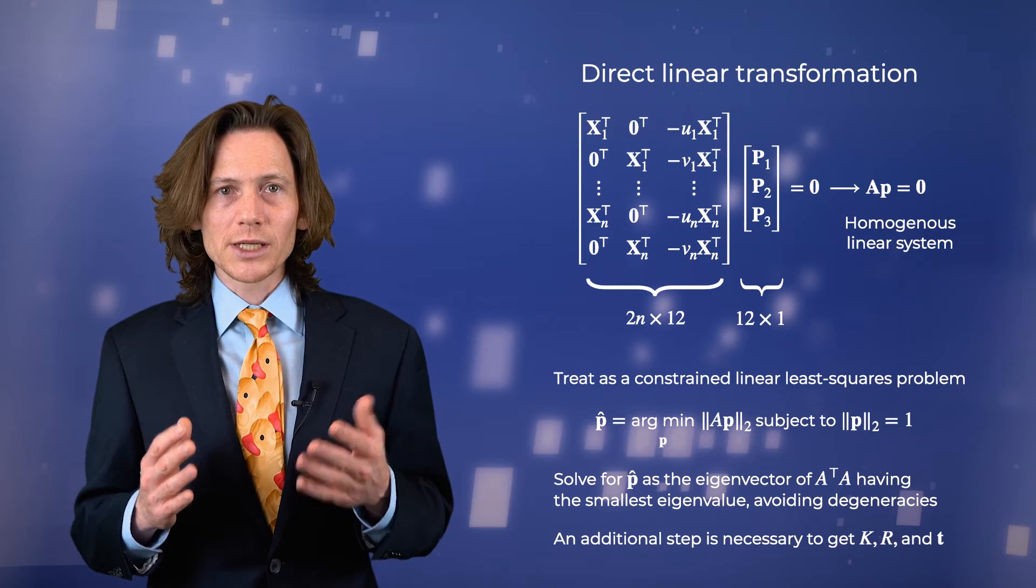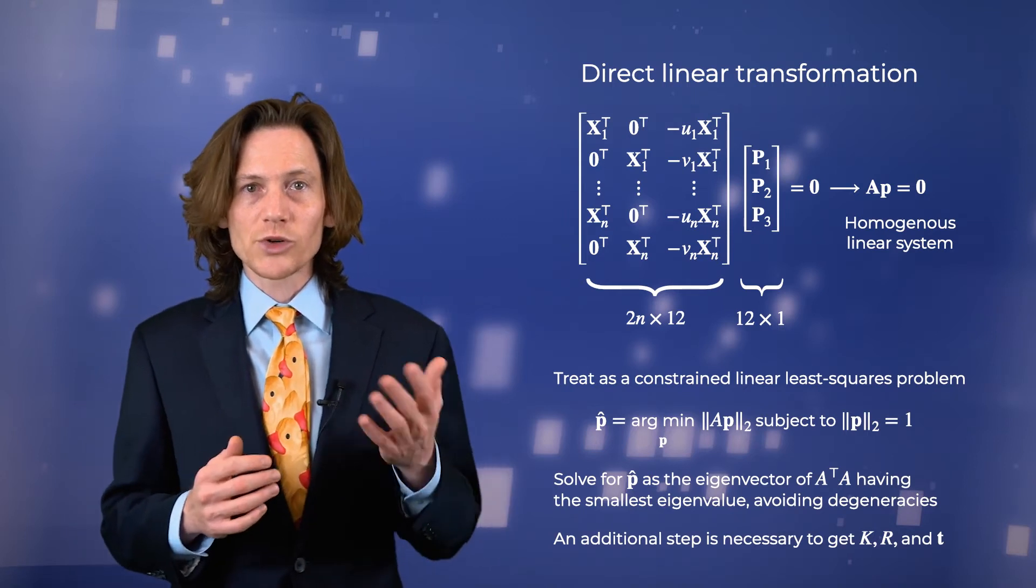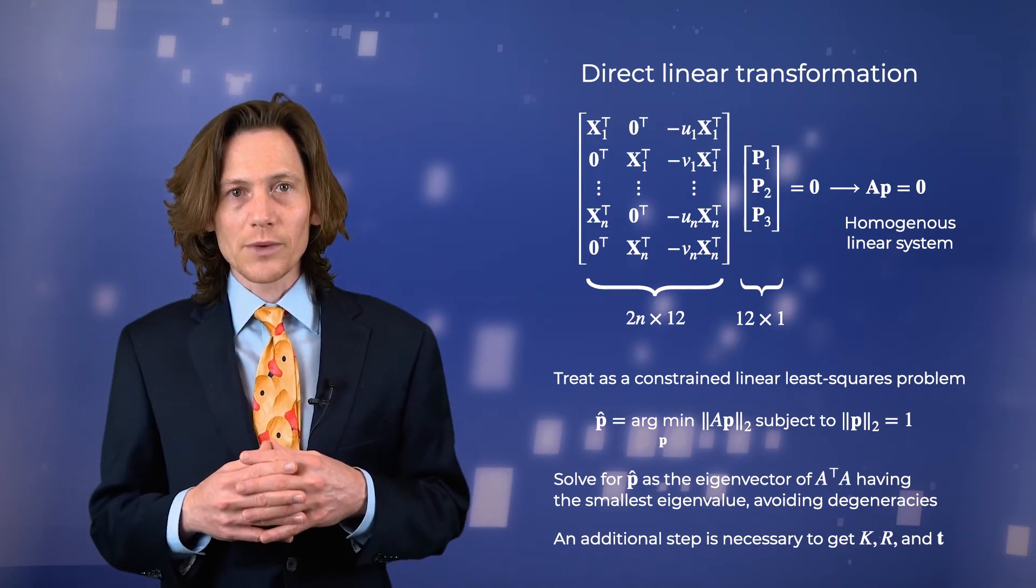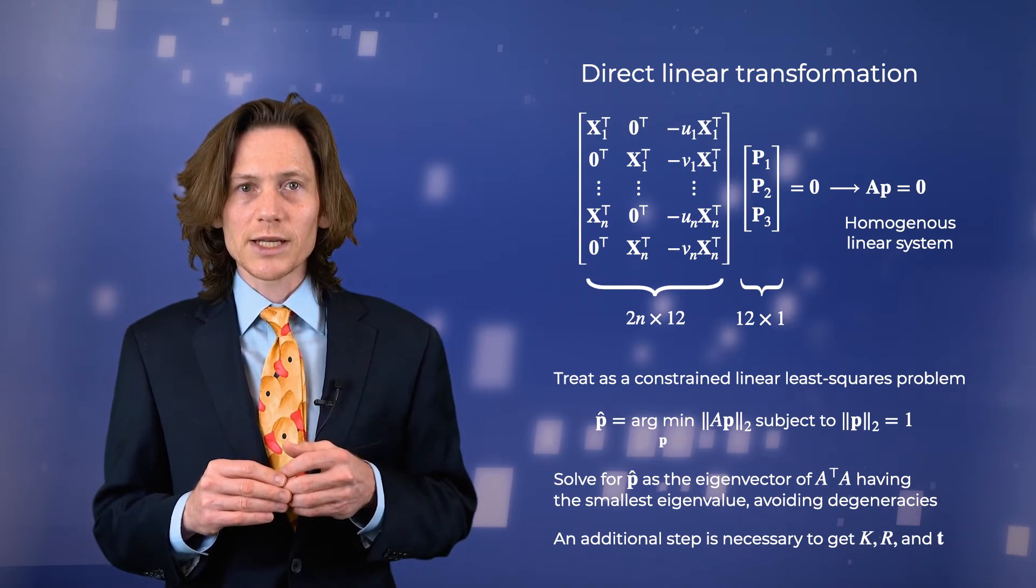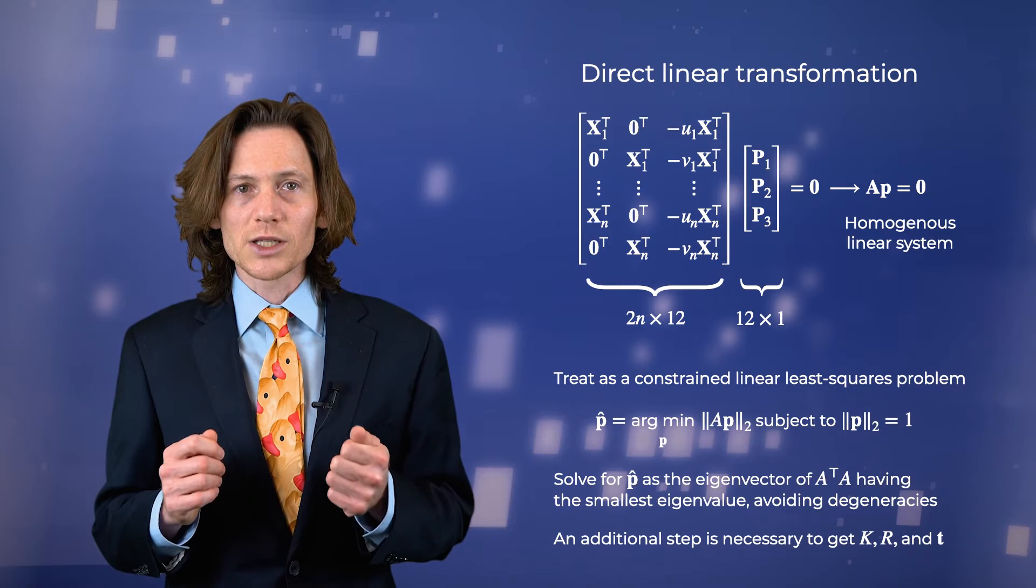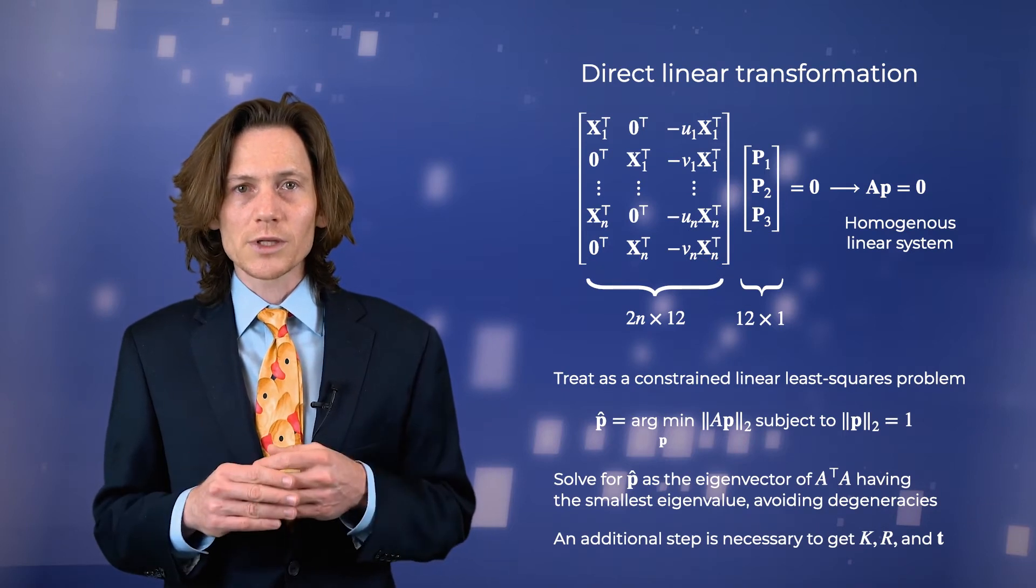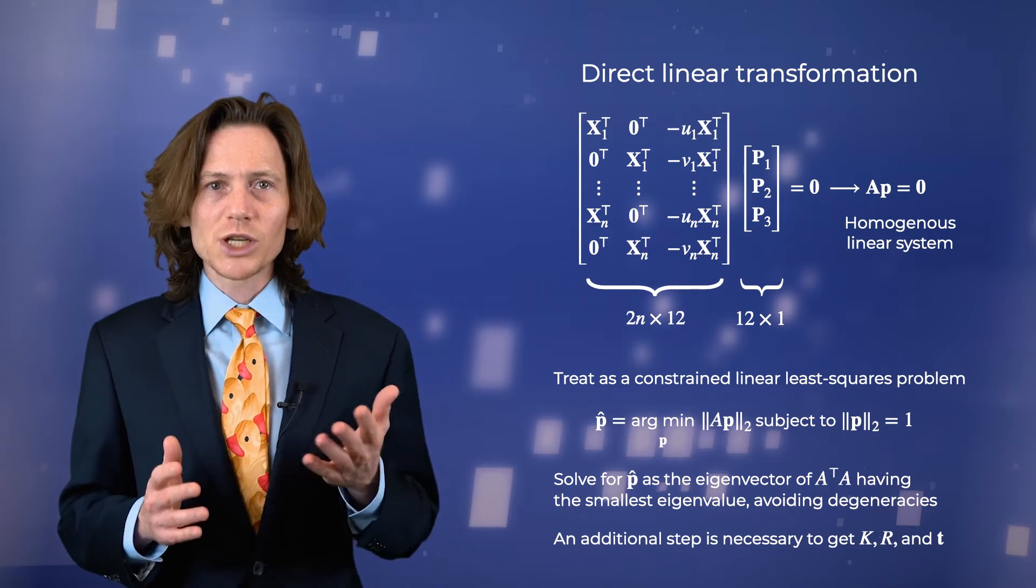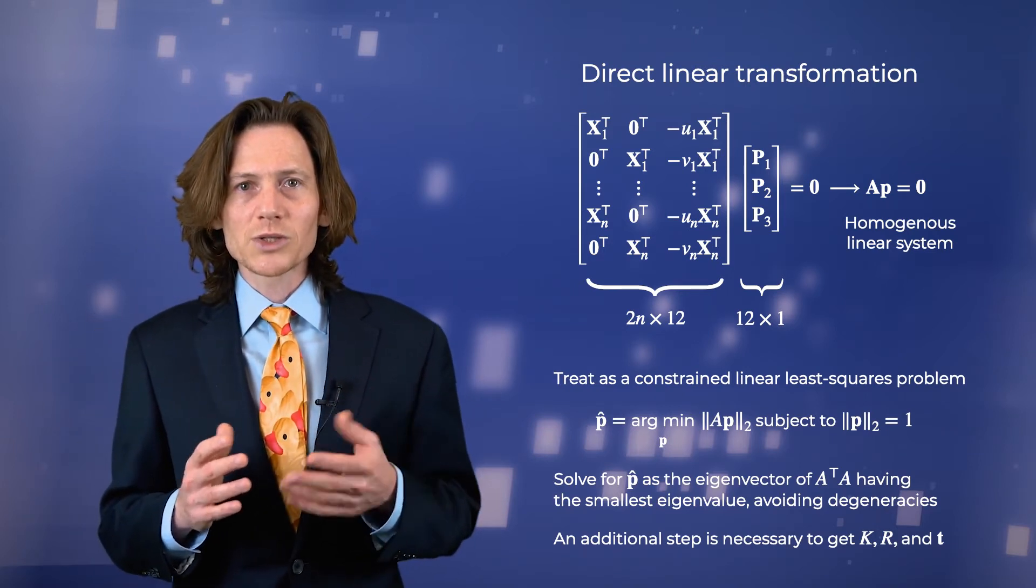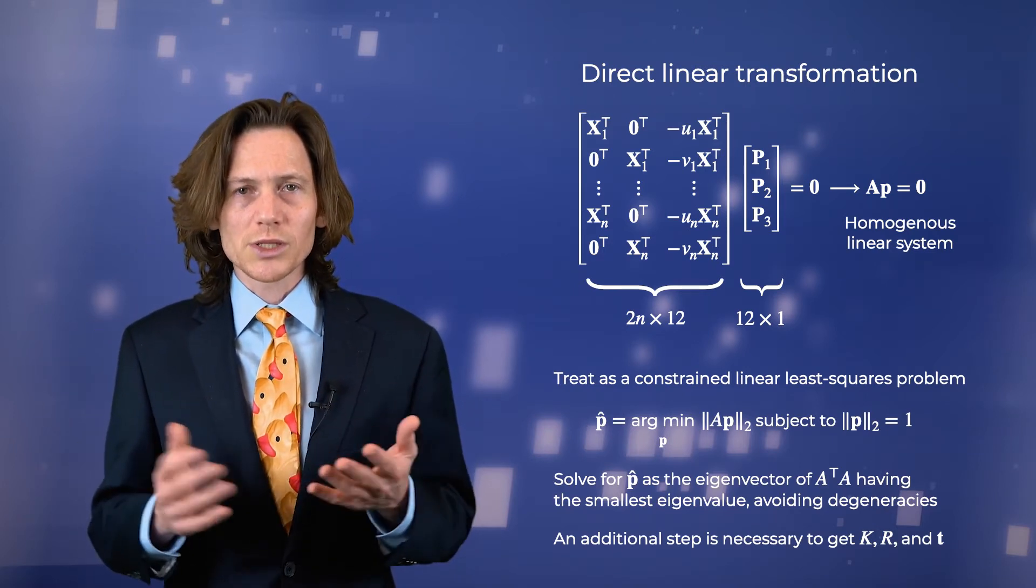Having estimated the camera matrix, an additional step is necessary to solve for the intrinsic and extrinsic parameters of the camera. One limitation of using the direct linear transform for calibration is that it doesn't allow us to incorporate prior knowledge about the intrinsic or extrinsic parameters. In practice, we often have information about some of these parameters. For example, the datasheet of the camera may specify that the pixels are square or that the skew is near zero.